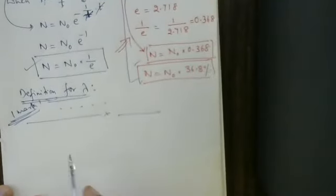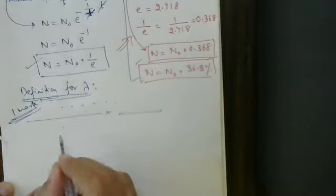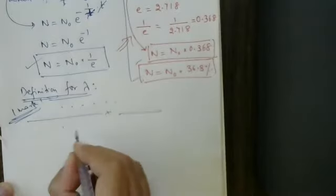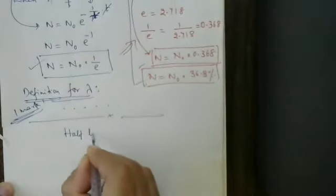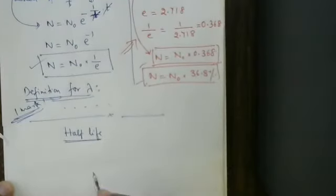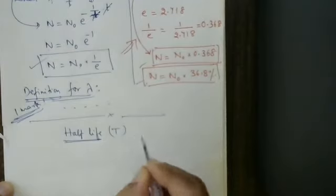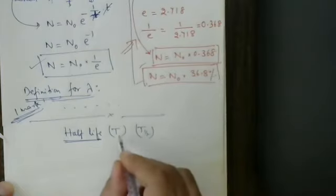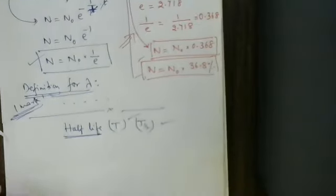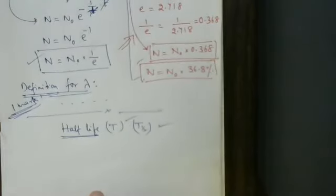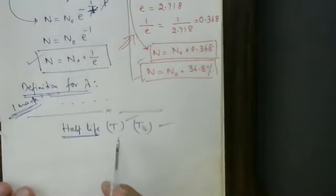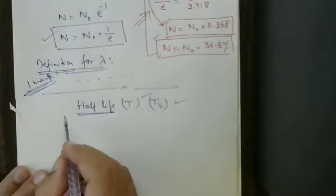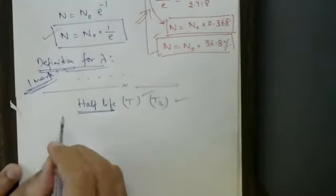Now the next topic: the definition carries one mark and the derivation carries three marks. It is called the half-life, represented by either capital T or T-half. In chemistry, they sometimes write T-half. You can write either capital T or T-half — whichever you prefer.